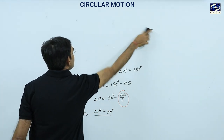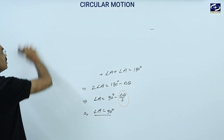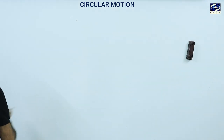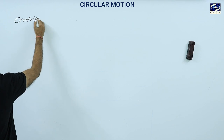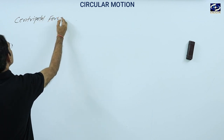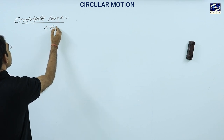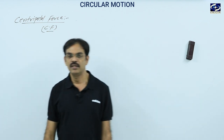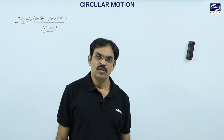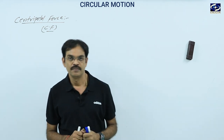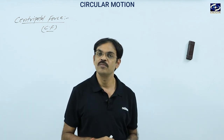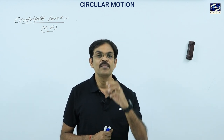We will first derive the acceleration and then centripetal force. What is centripetal force? When any particle performs circular motion, it needs a force to continue that circular motion. That force, which is responsible for circular motion, always has its direction towards the center of the path. This is centripetal force — centripetal force is responsible for circular motion.